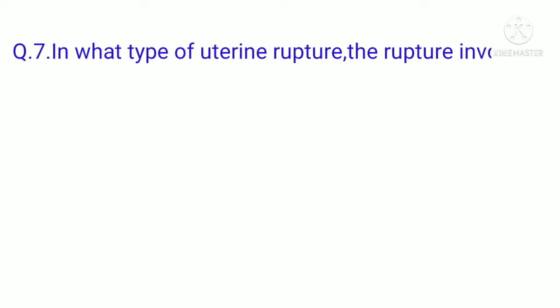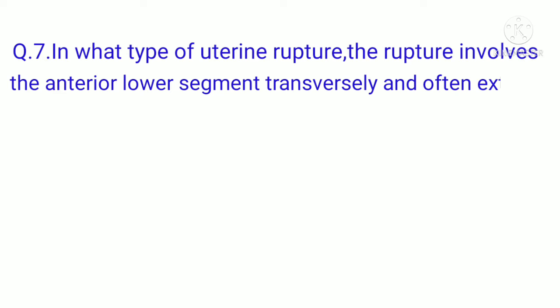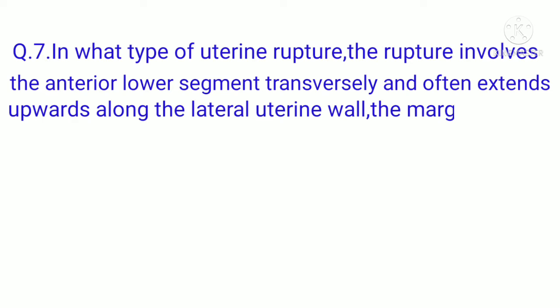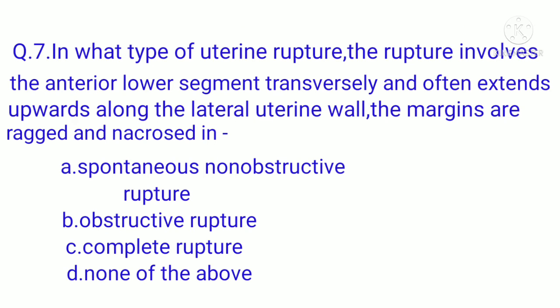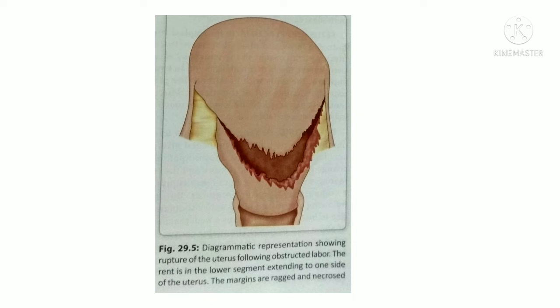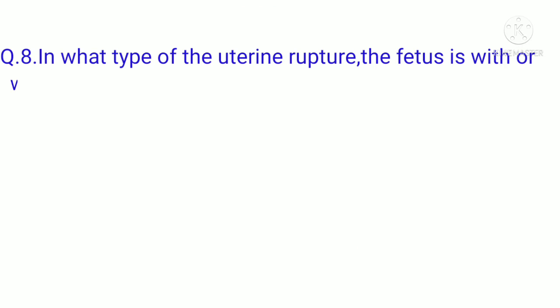Question 7: In what type of uterine rupture does the rupture involve the anterior lower segment transversely and often extend upwards along the lateral uterine wall with ragged and necrotic margins? The correct option is B, obstructive rupture. Spontaneous non-obstructive rupture usually involves the upper uterine segment and often the fundus. Complete rupture usually follows disruption of the scar in the upper uterine segment. The diagram shows the ragged and necrotic margin.